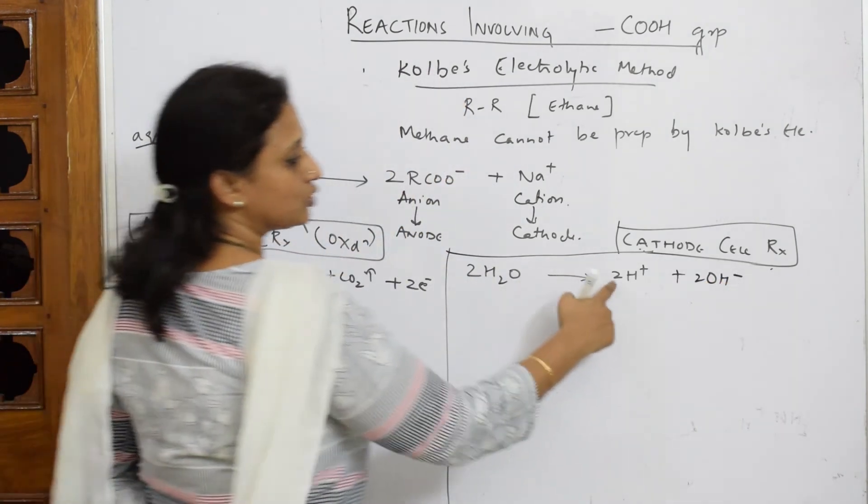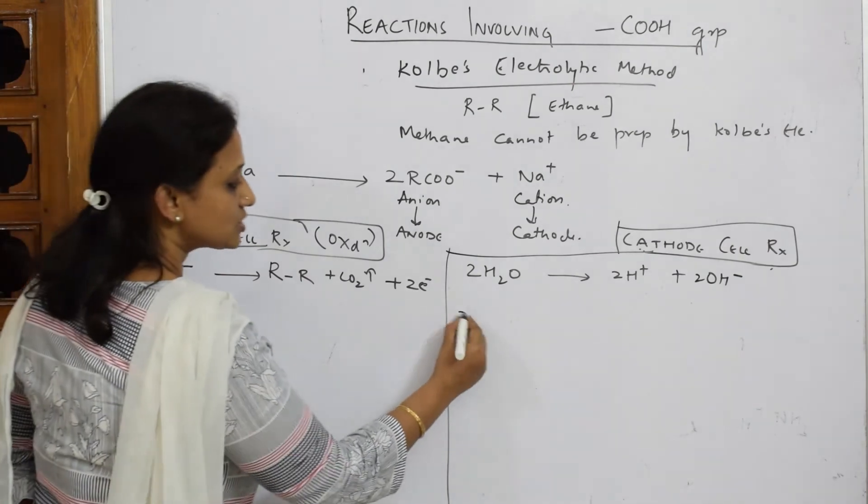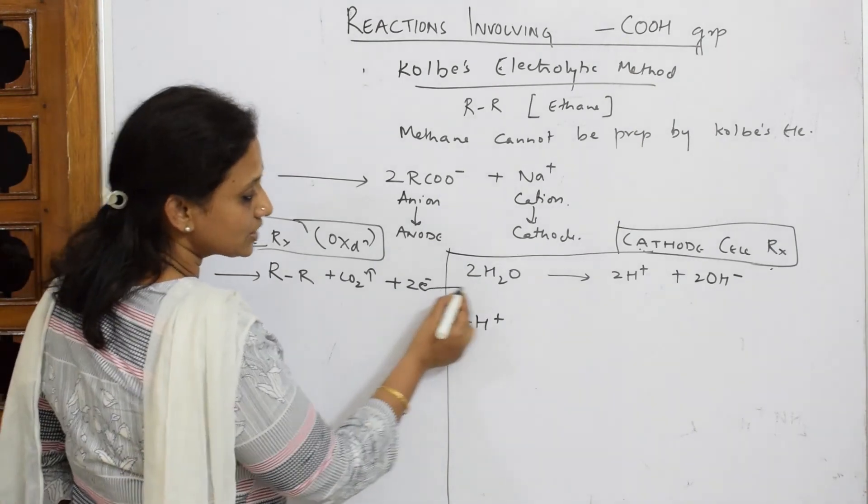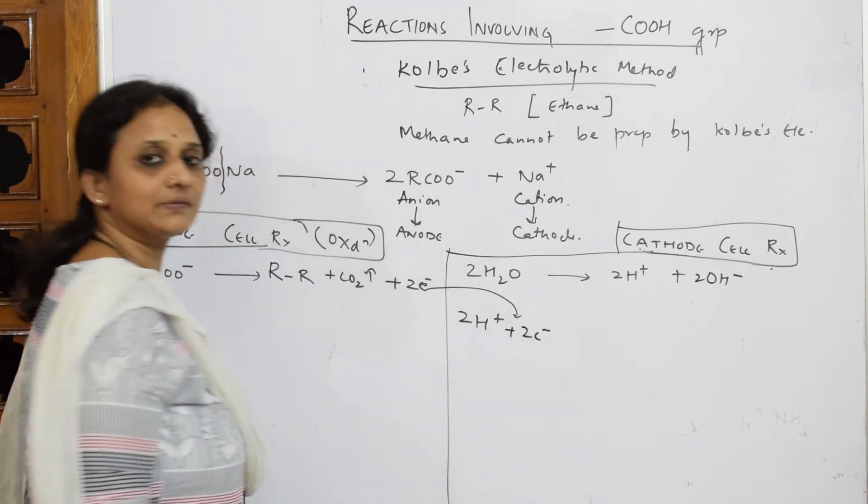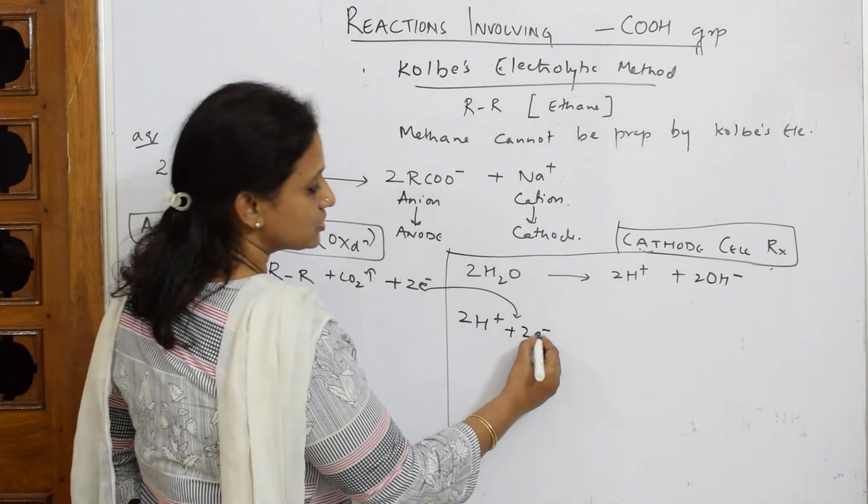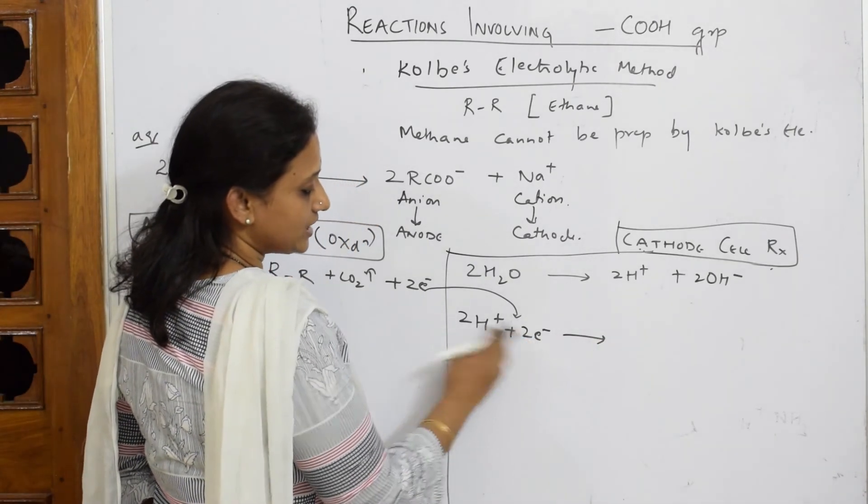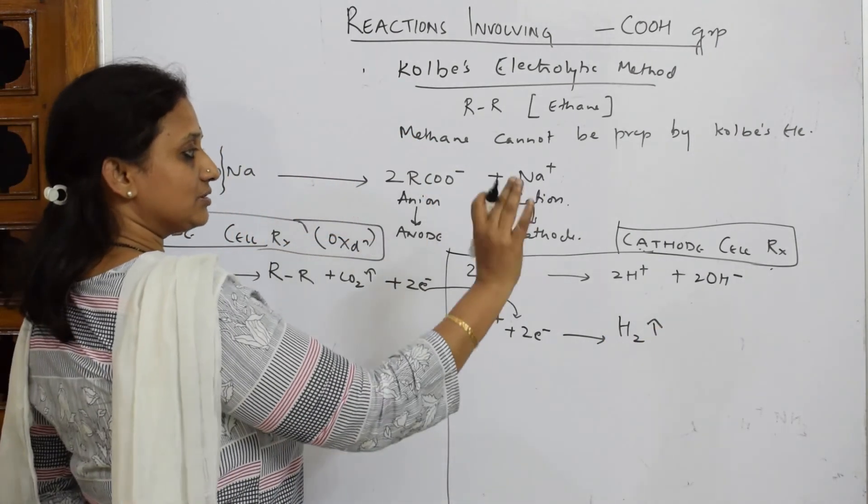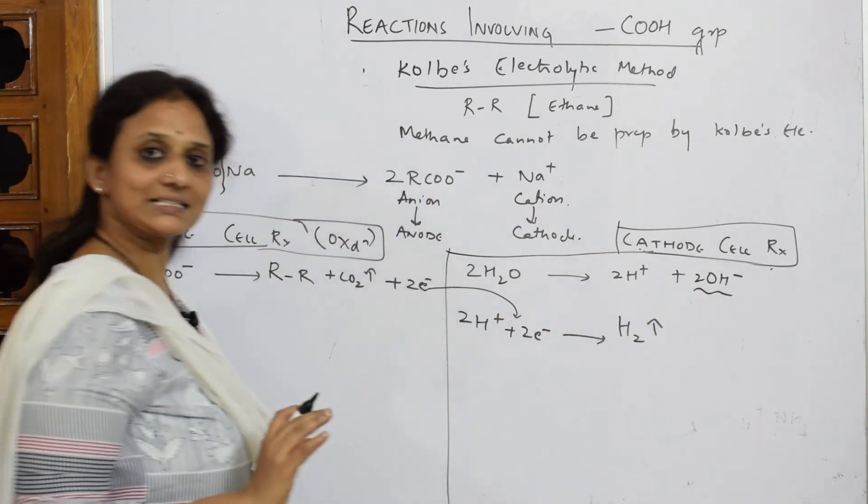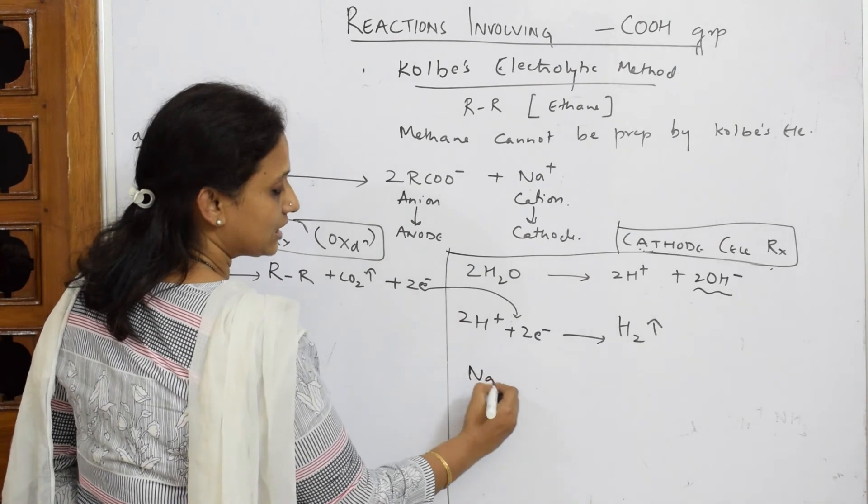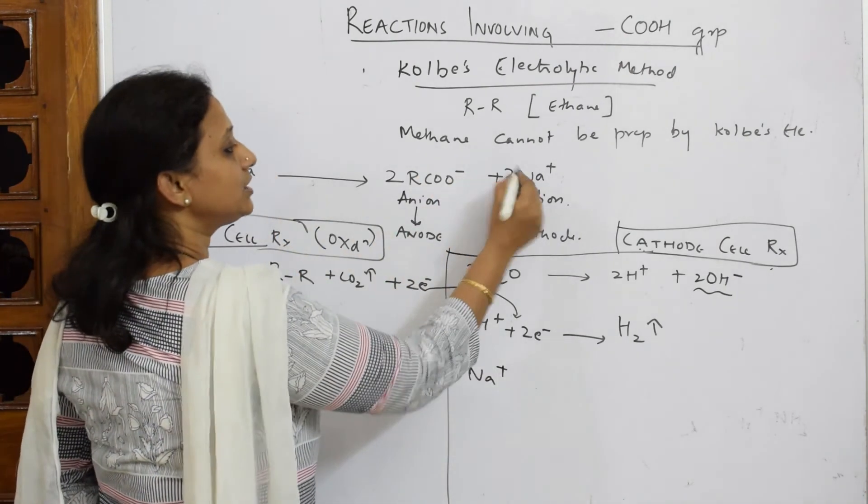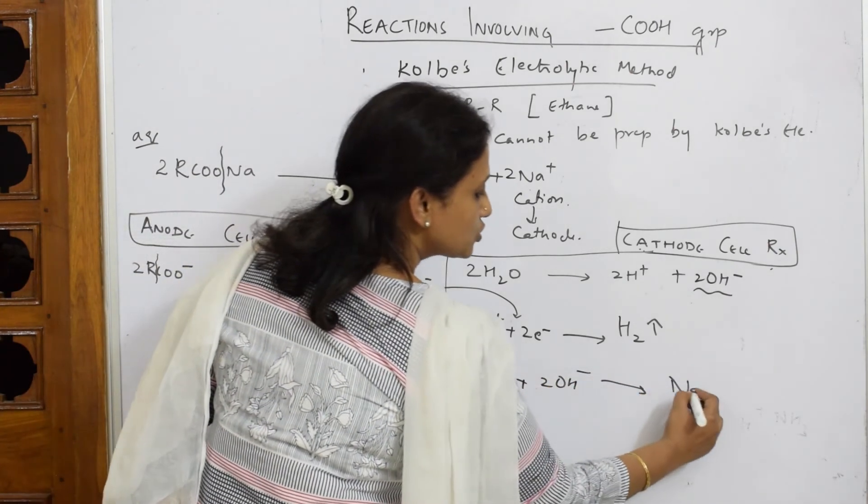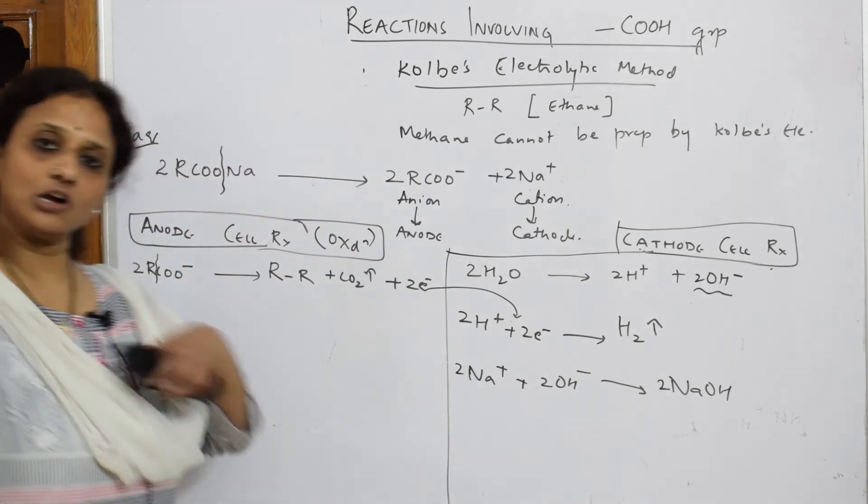This 2H+ is going to pick up these 2 electrons. That is where cathode reduction happens. These 2 electrons from here are accepted by this. These 2 electrons are picked up. I get hydrogen gas. Now observe, your OH- is still existing there. Your Na cation will combine. How many did I take? Two. So, 2 Na cation will combine with 2 OH- giving me 2 sodium hydroxide. This is called electrolytic method.